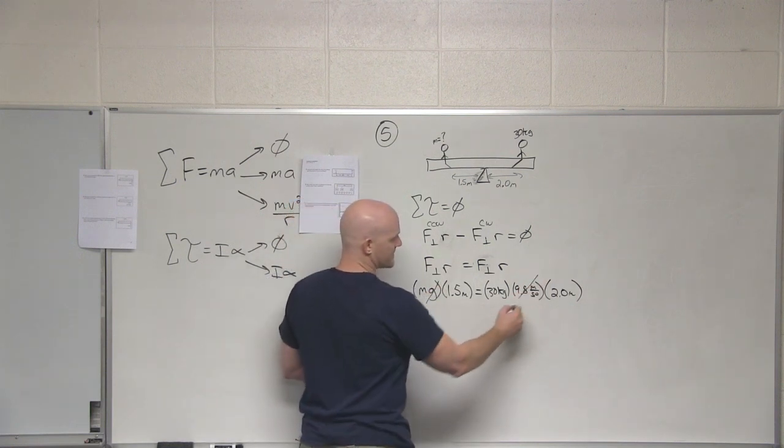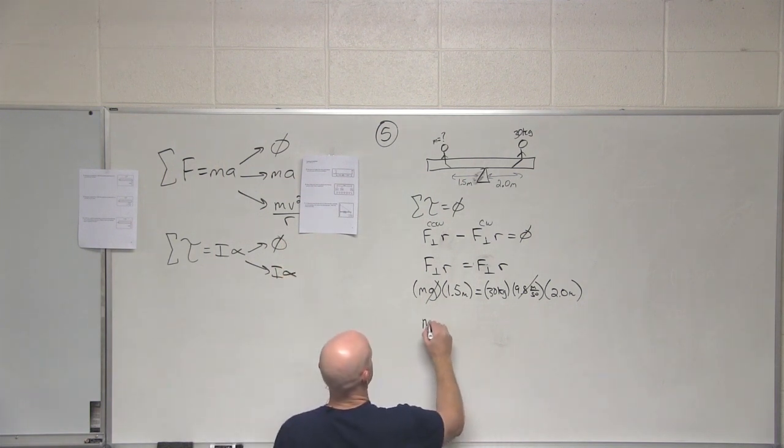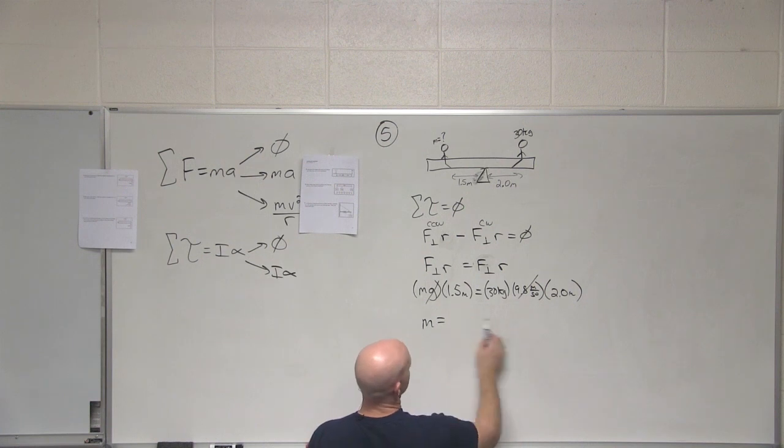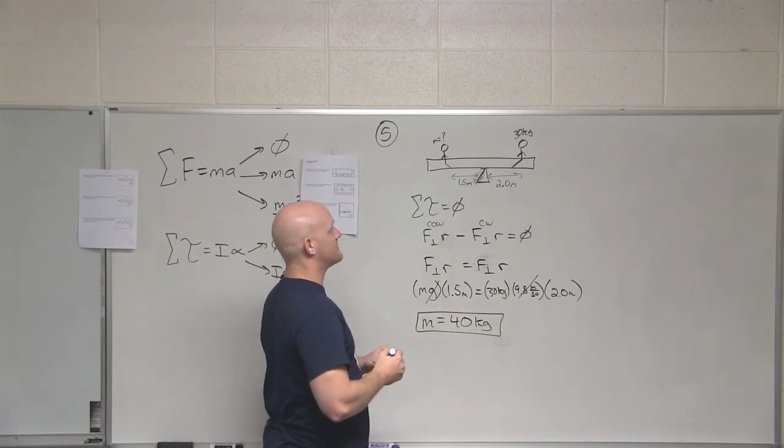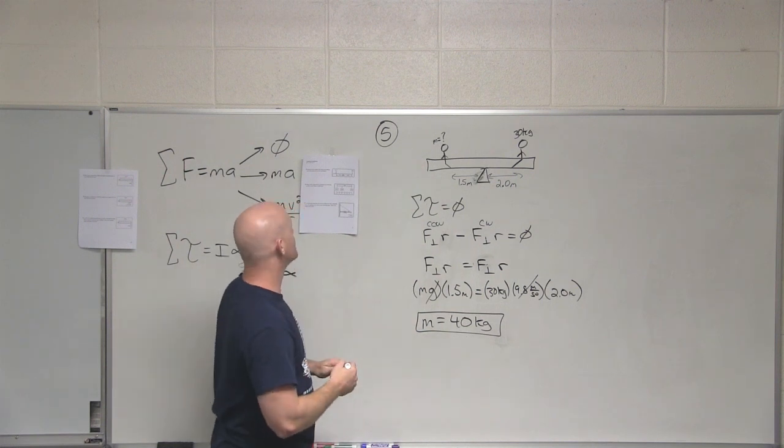And we can totally solve for our mass now. Notice, I can just get rid of the g's—they're going to cancel anyways. So in this case, 30 times 2 is 60. Divide that by 1.5. And what do we get? Cool. So the mass of that child must be 40 kilograms. Sum of the torques here equals zero.